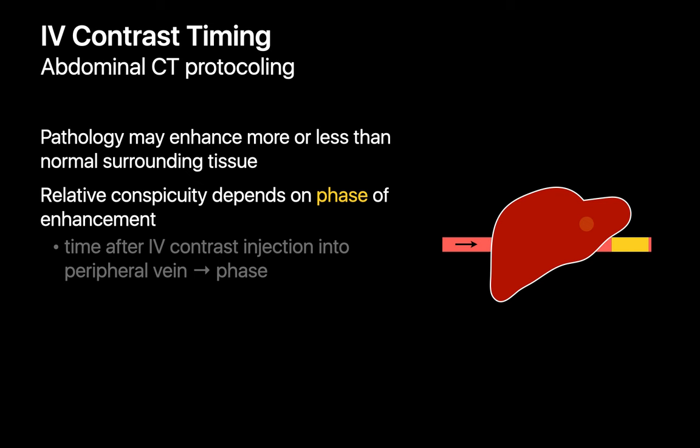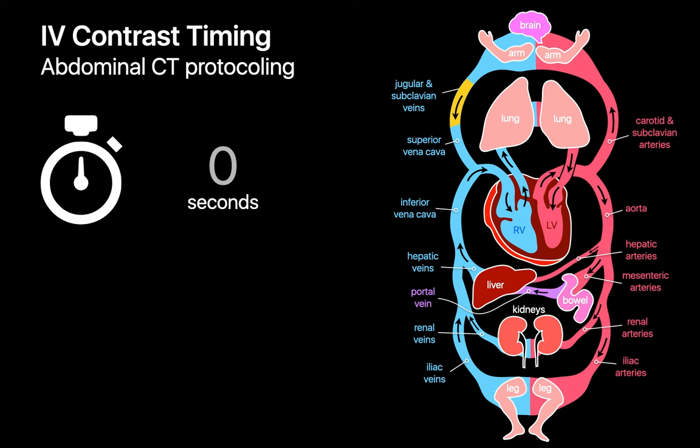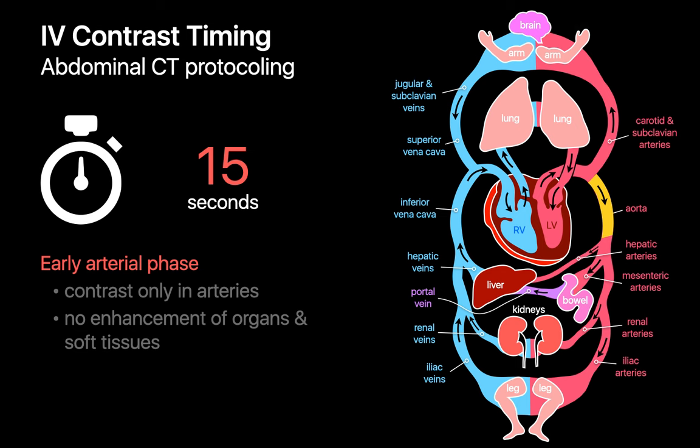Let's go on a deeper dive into intravenous contrast timing. Intravenous contrast is usually introduced into the bloodstream via an angiocath in an upper extremity vein or via the distal tip of a central venous catheter in the SVC. In a patient with relatively normal cardiac output, intravenous contrast will have reached the right atrium by around five seconds after the injection began. By the seven second mark, contrast will have reached the pulmonary artery. By the 12 second mark, contrast will have passed through the pulmonary capillaries and reached the pulmonary veins and left atrium. By the 15 second mark, the left ventricle has already propelled contrast into the aorta in most people.